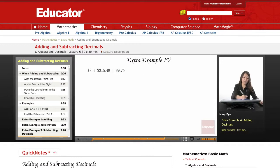The last example, so adding these decimals together, we have $8 and $215.49 and $0.75.